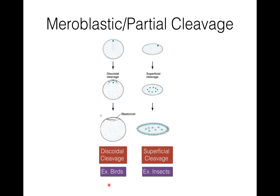Superficial meroblastic cleavage is present in centrolecithal eggs, where cleavage is restricted to the peripheral cytoplasm. In insect eggs, the central cytoplasm shows free nuclear division, producing many nuclei. All the nuclei migrate toward the peripheral cytoplasm, and cleavage occurs only in the peripheral region. As a result, a superficial layer of blastomeres is formed around the egg. This type of cleavage is present in centrolecithal eggs like insects.